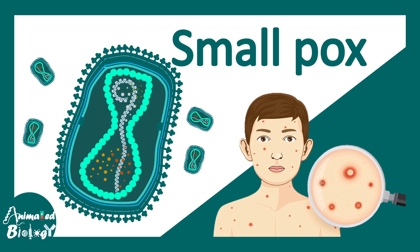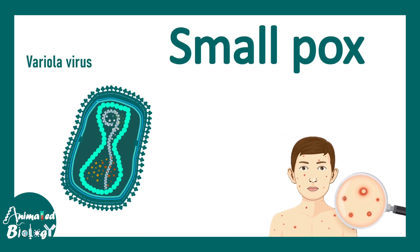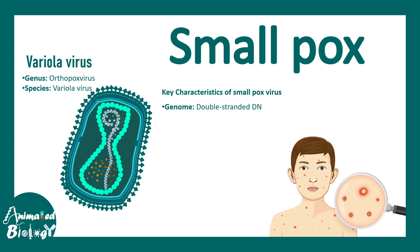In this video we'll talk about smallpox. Smallpox is caused by the virus known as variola virus, also known as smallpox virus. It belongs to the orthopoxvirus genus and it is a DNA virus — specifically a double-stranded DNA virus. It has a brick-like, ovoid shape and is a large virus, approximately 200 to 300 nanometers in size, making it one of the largest viruses in the entire viral kingdom.